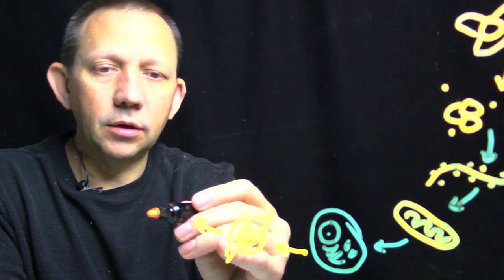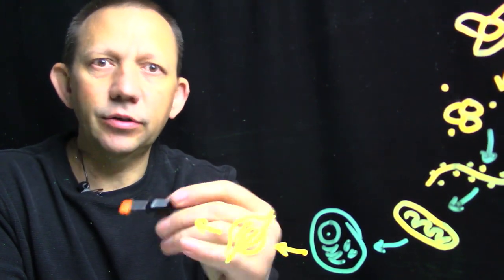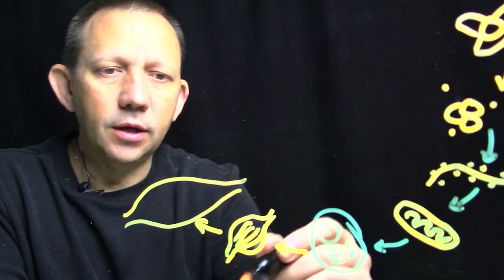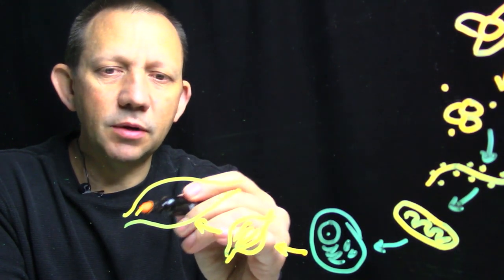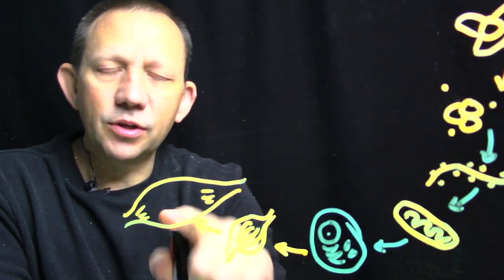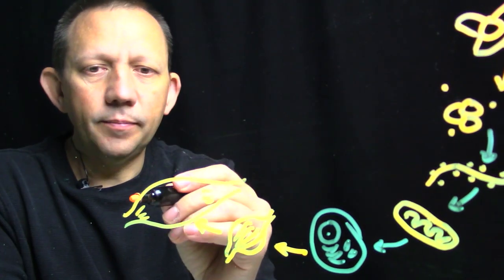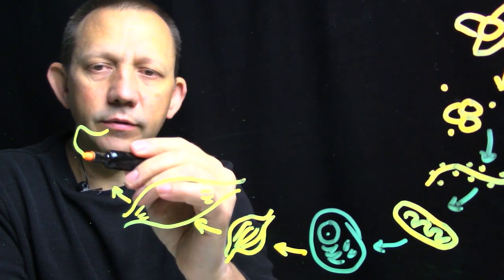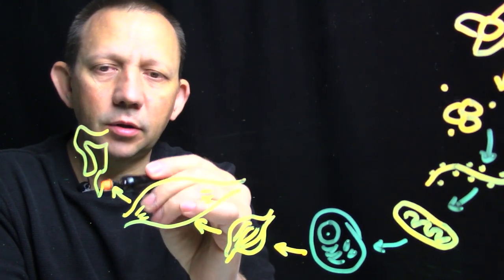Groups of tissues that work together become organs. We're going to draw another muscle. This is a tiny muscle with the fibers, and this is the big muscle here. A muscle is an organ. An organ makes up an organ system. I'm going to do guts here, intestines or something like that. An organ system like the digestive system.